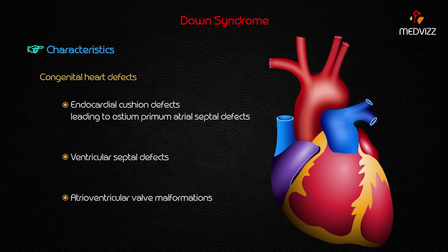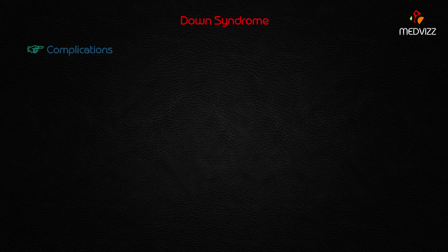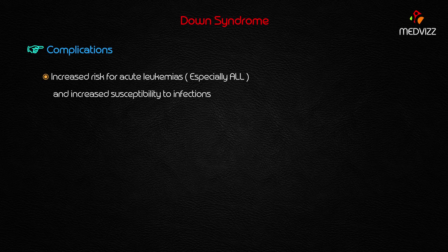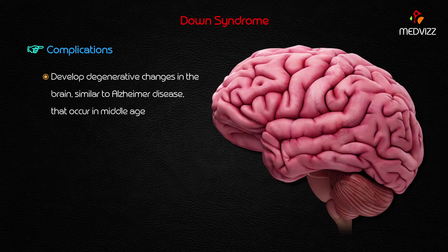The most common congenital heart defect is endocardial cushion defect leading to ostium primum ASD. Complications of Down syndrome include increased risk for acute leukemias — especially acute lymphocytic leukemia — increased susceptibility to infections, and degenerative brain changes similar to Alzheimer's, which become prominent in middle age.